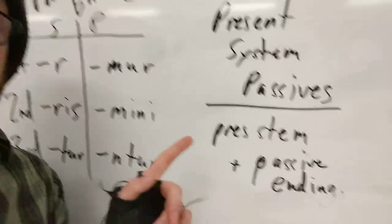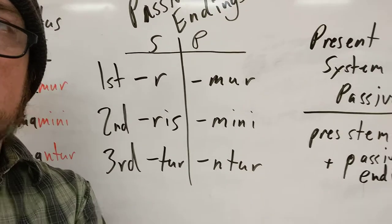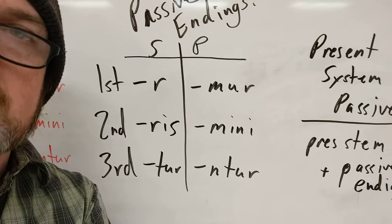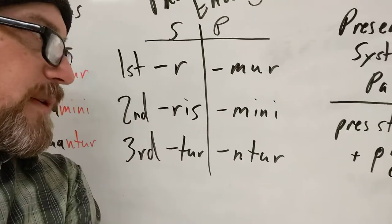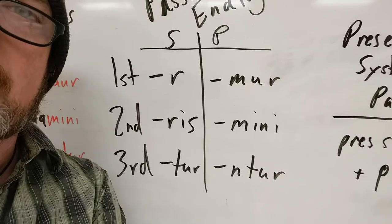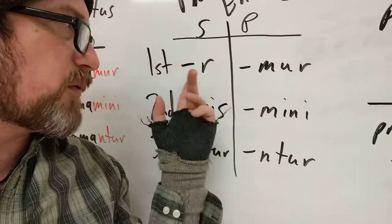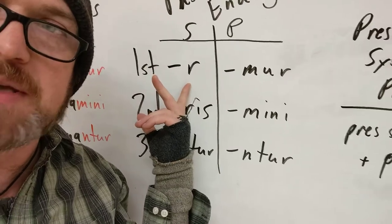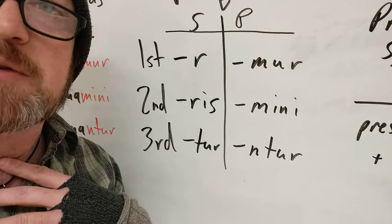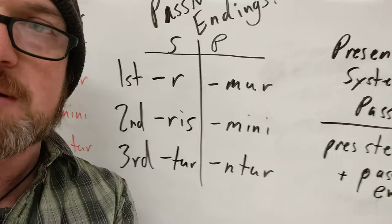For the present system, the way you make a verb passive is you take the present stem and then add passive endings. We're still talking about personal endings, but different ones than we used for active verbs. Where you had -o or -m, -s, -t, -mus, -tis, -unt, now you're going to have -r, -ris, -tur, -mur, -mini, -untur. The main feature is the letter R — they all have the letter R, except -mini. The second person plural, when the subject is 'you all,' does not have an R in the ending.